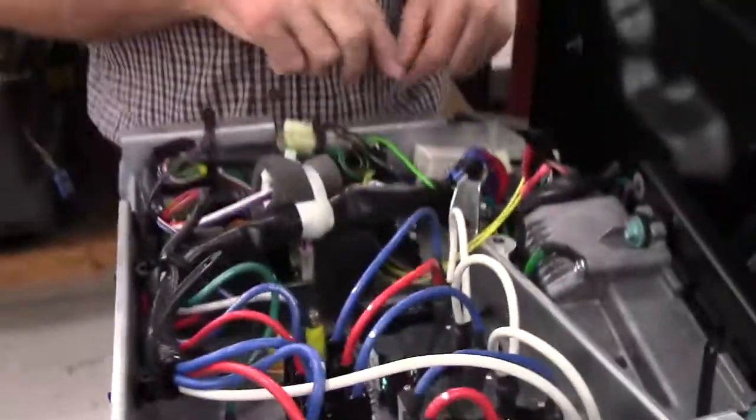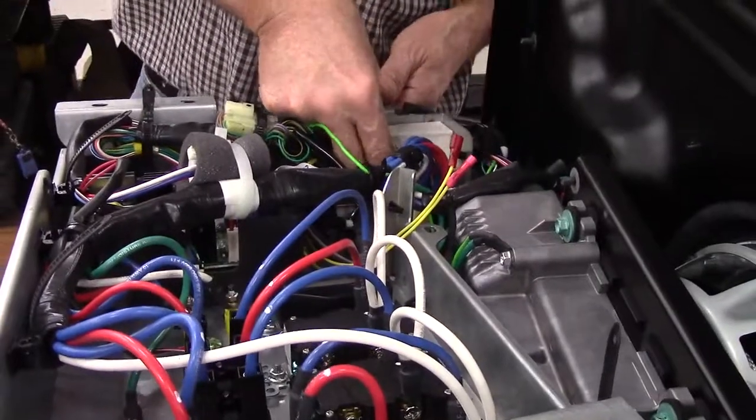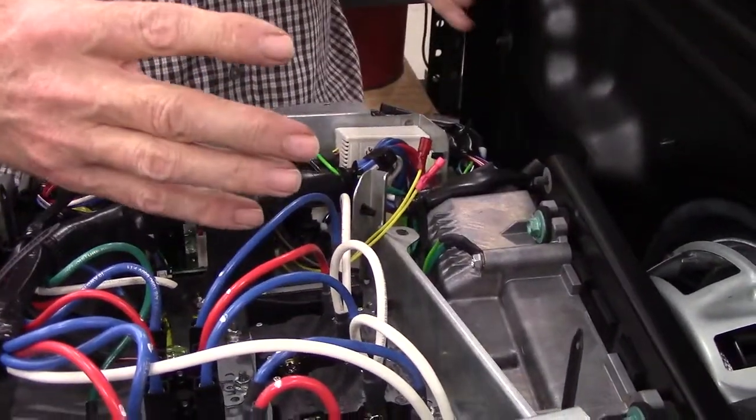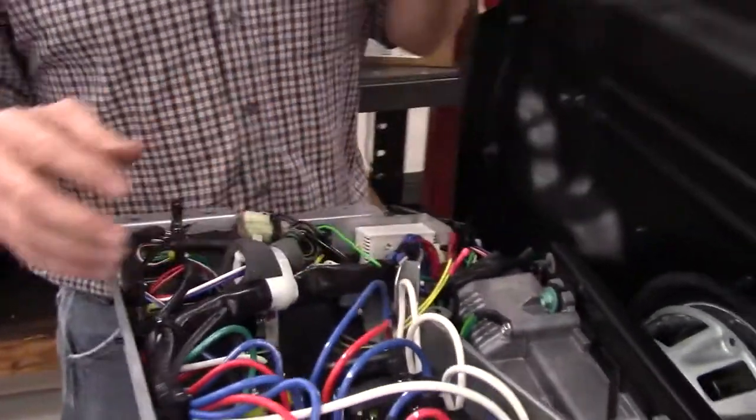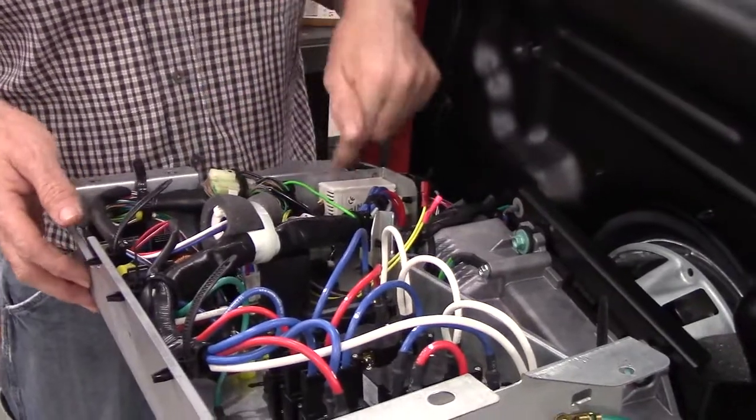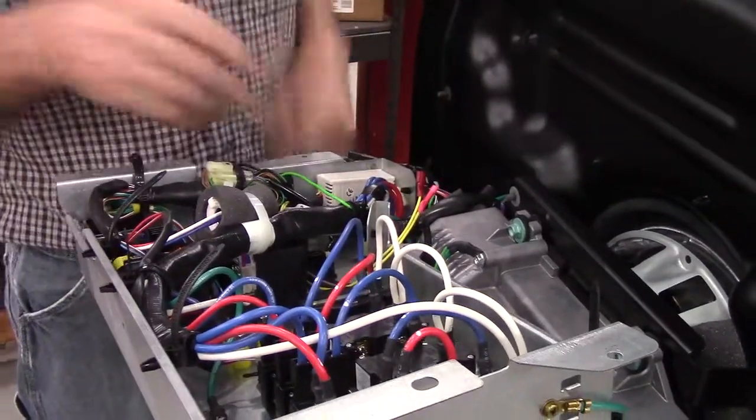This is simply an alternate location. So you take apart the front of the cabinet based on the original video, and then whenever you get to the box, if you choose not to locate it here, you can locate it here. Now it's your choice.